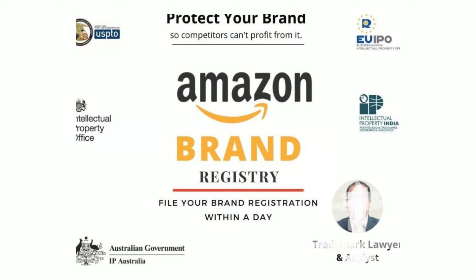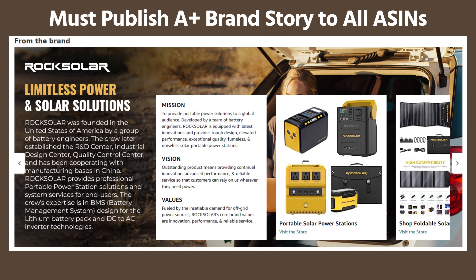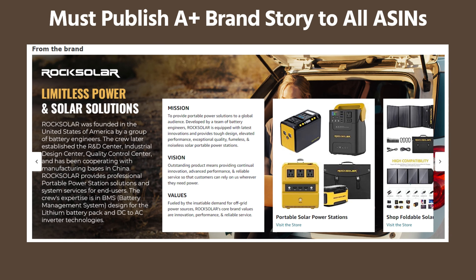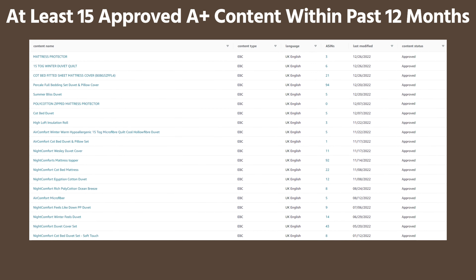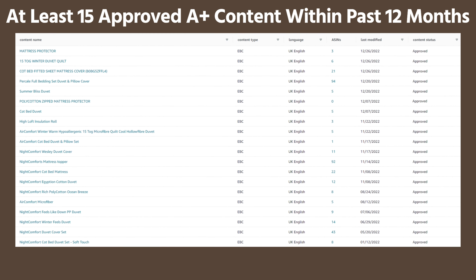If you are a brand registered seller, you can easily add basic A plus content. But to add premium A plus content, you need to meet two main criteria. Number one: you must have published an A plus brand story to all ASINs within your catalog that you own. Number two: you must have at least 15 A plus content submissions that have been approved within the past 12 months.